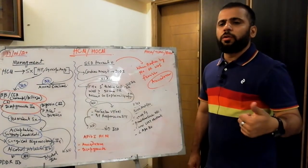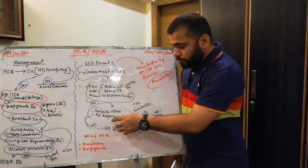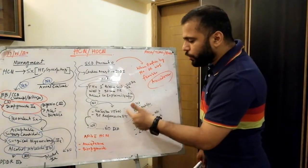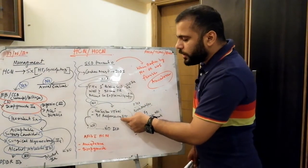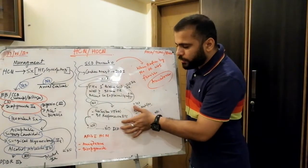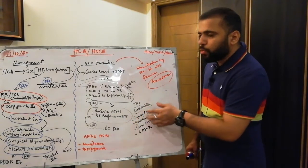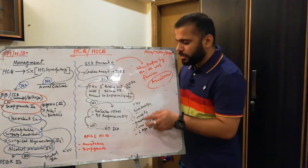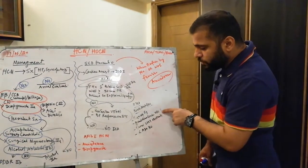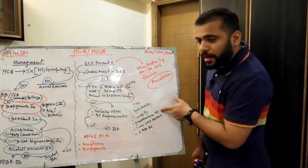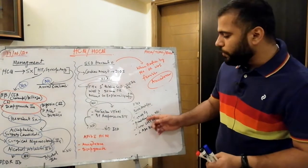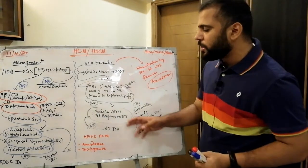If none of these are present, check for: non-sustained ventricular tachycardia on ECG, or an abnormal BP response on exercise treadmill test (ETT) — a rise of less than 20 mmHg. If any two of these risk factors are present, then check for risk modifiers: syncope in the last 5 years, gadolinium enhancement on MRI, severe LVOT obstruction, or age under 30. If any modifier is present alongside these findings, ICD is class 2 indication.